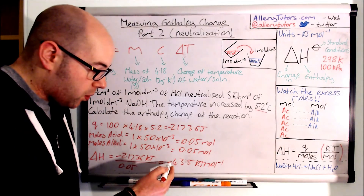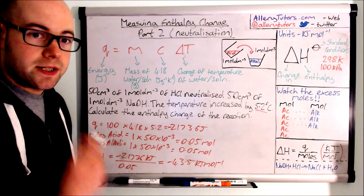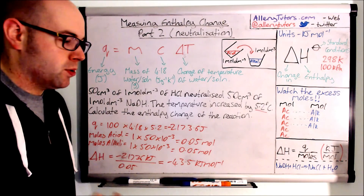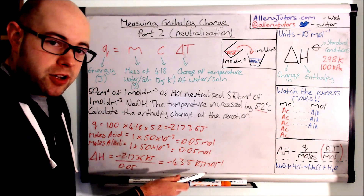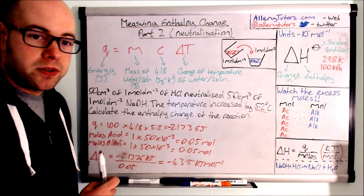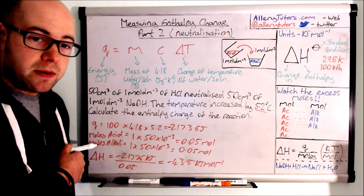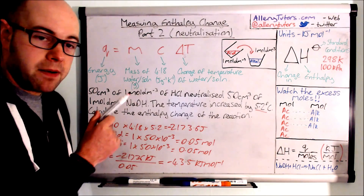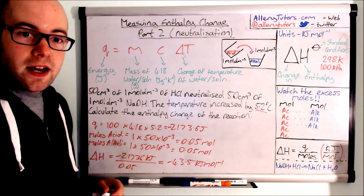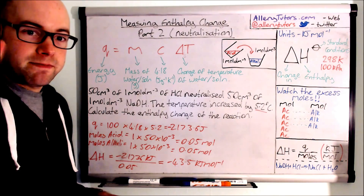Remember you always have to include the negative sign — it shows the reaction is exothermic. Make sure your units are correct and that you've worked out the right number of moles. You must calculate moles for both substances to determine which one is in excess, if any. Hope that helps. Bye-bye.